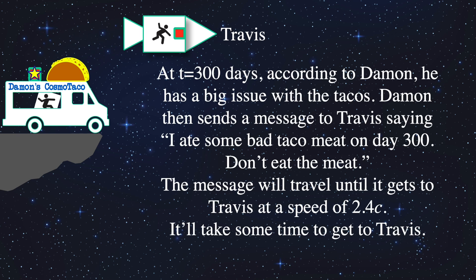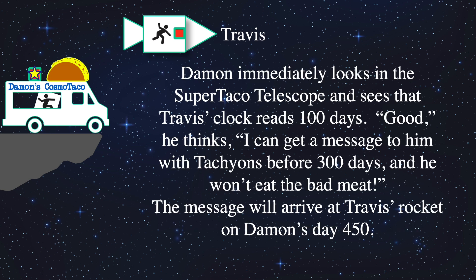At 300 days on Damon's clock, he has a huge issue with the tacos. Damon sends a message to Travis saying, I ate some bad taco meat on my 300th day, don't eat the meat. That message will travel by tachyon antitelephone 2.4 times the speed of light until it catches up to Travis, who's flying away at only eight tenths the speed of light. However, before sending the message, Damon does look in his super taco telescope and reads that Travis's clock in Travis's spaceship is only at 100 days. So he says to himself, good, I can get the message to him before the meat expires on his 300th day so he won't eat the bad meat.